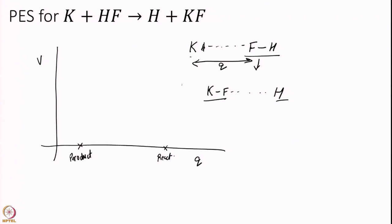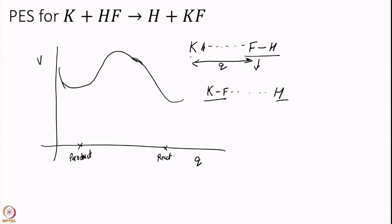It is just inverted — no big deal. I will get a reaction that looks like this — and remember it is endothermic, so it will look like this with a higher product energy. Now the question is: looking at this energy surface, how do I explain the difference between translational energy and vibrational energy? I cannot actually — for that we have to move to multidimensional potential energy surfaces.